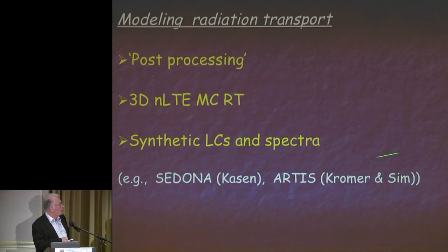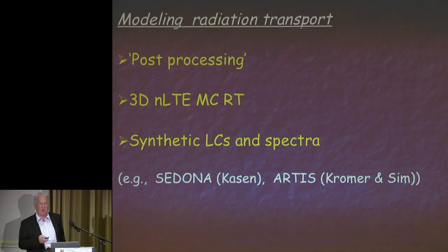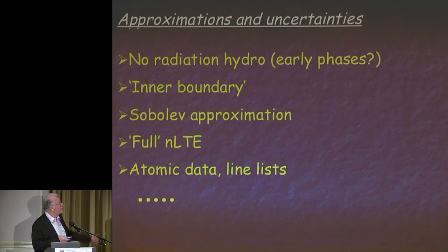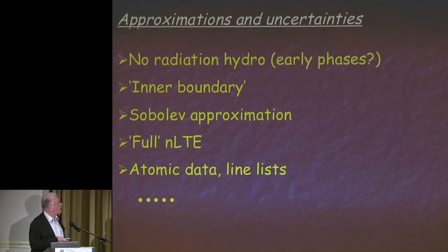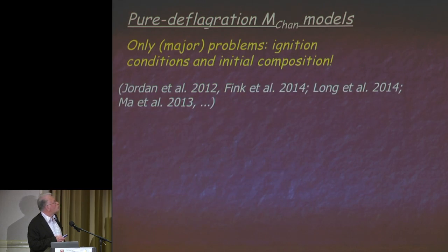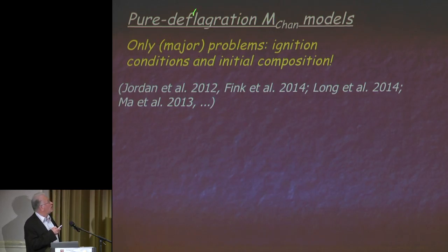In addition, we have to model radiation transport to couple the hydro to the data, done in a post-processing step. We need 3D non-LTE Monte Carlo radiative transfer to compute the light curve spectra. There are two codes out there—one by Dan Kasen called Sedona, and ours—and both codes are working fine. They have shortcomings; we are aware of all of them. But I don't think they are so severe that they destroy what we are doing.